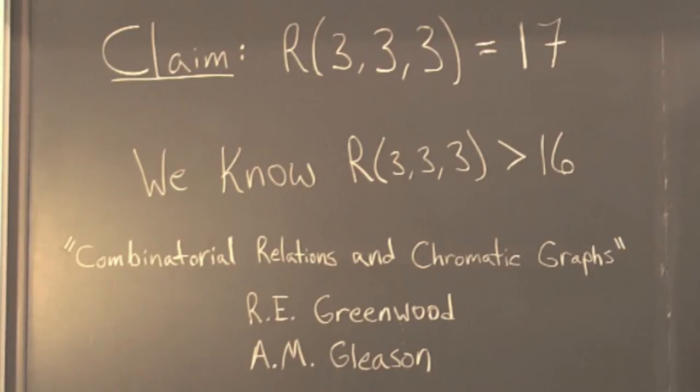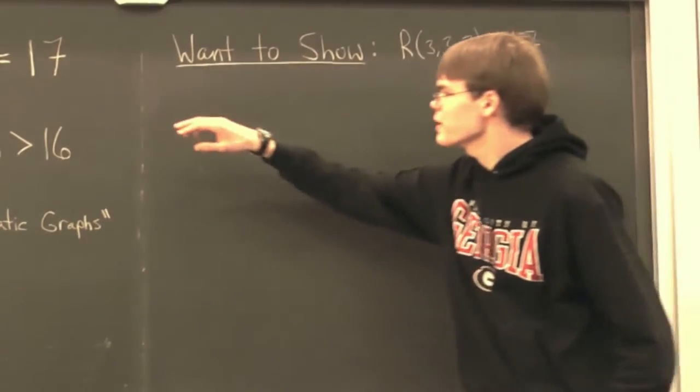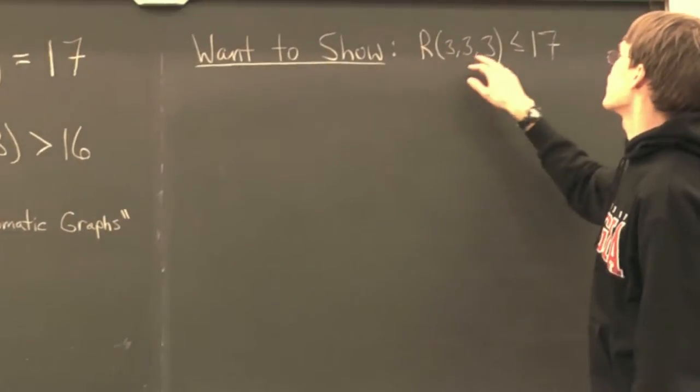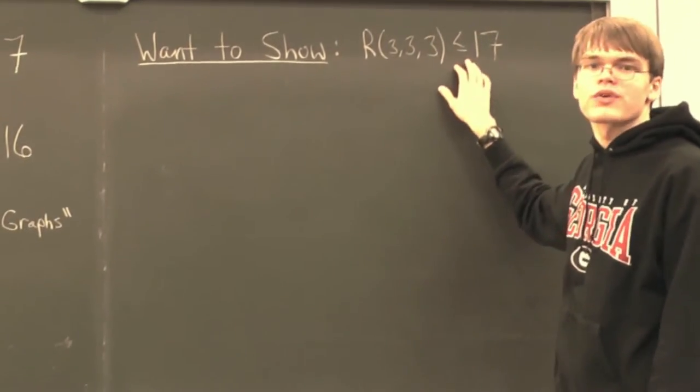We might return to it in a future one. Assuming that we know that R(3,3,3) is greater than 16, we want to show that it's less than or equal to 17.